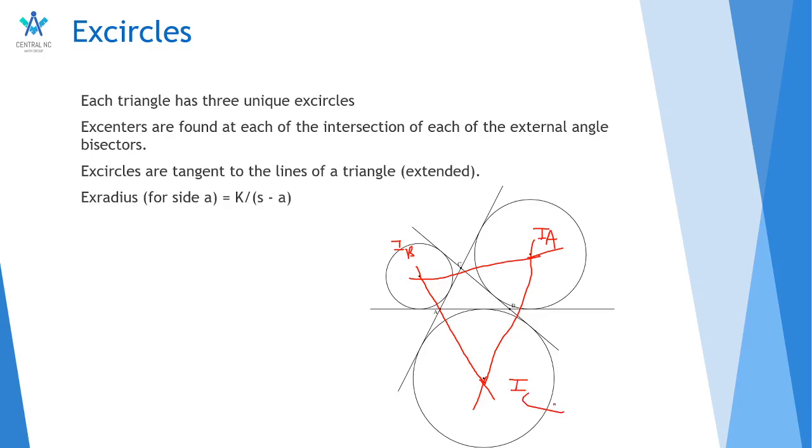Another property is that excircles are tangent to the lines of the triangle. So if you extend them, you can see that they're tangent here. They don't intersect, but they're tangent here. So they're tangent at those points with the extended sides of the triangle. And to find the length of the exradius, formula k over s minus a, with a being a side length, s being your semi-perimeter, and k being your area of the triangle.